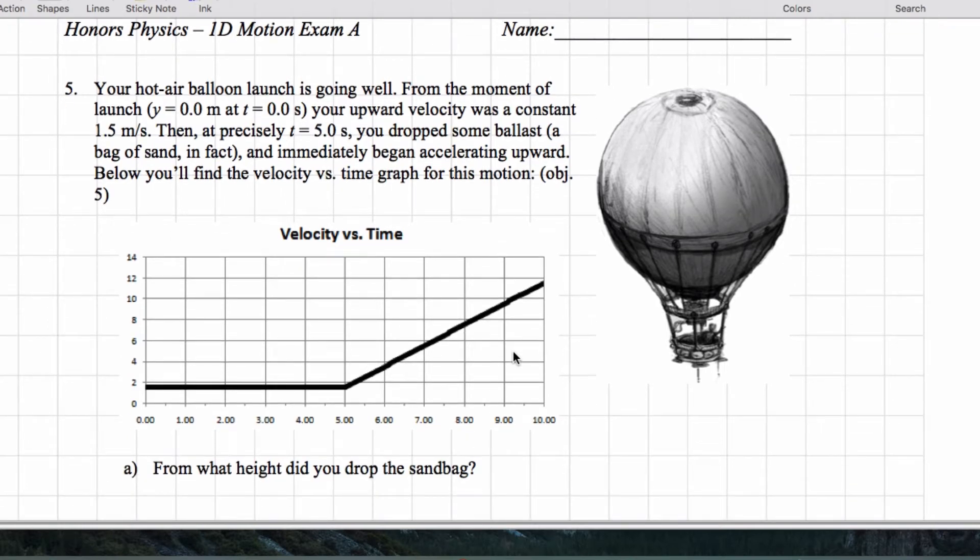This is for the balloon. Now we're assuming that the balloon starts from the ground. And we have a constant 1.5 meters per second. So this really isn't the best scaled drawing, because we should be clear that this line here is happening at 1.5 meters per second. And then at precisely five seconds, we drop the sandbag.